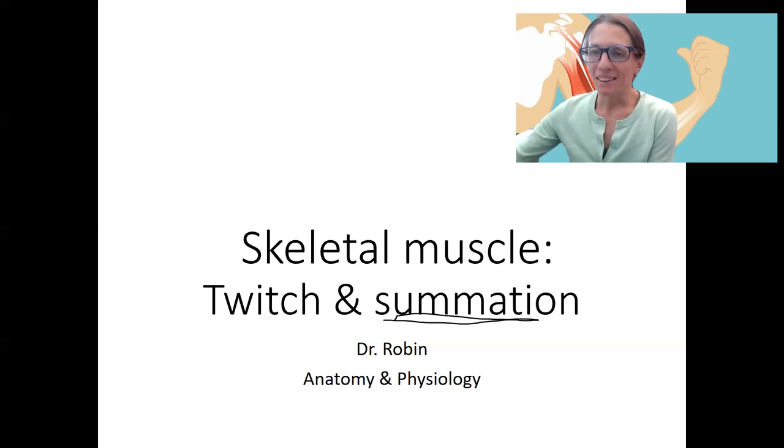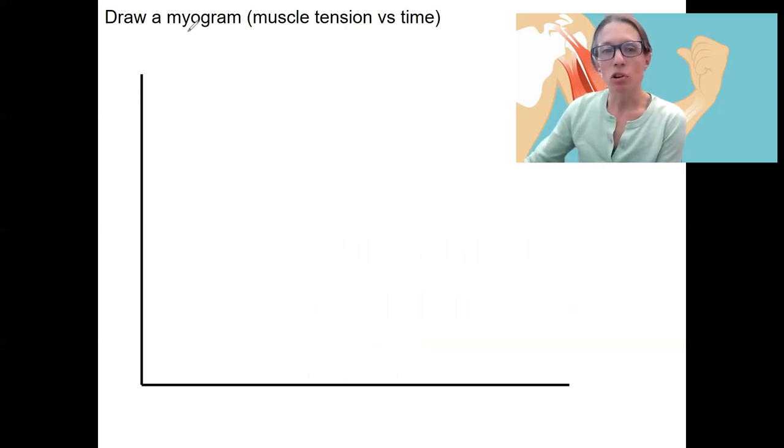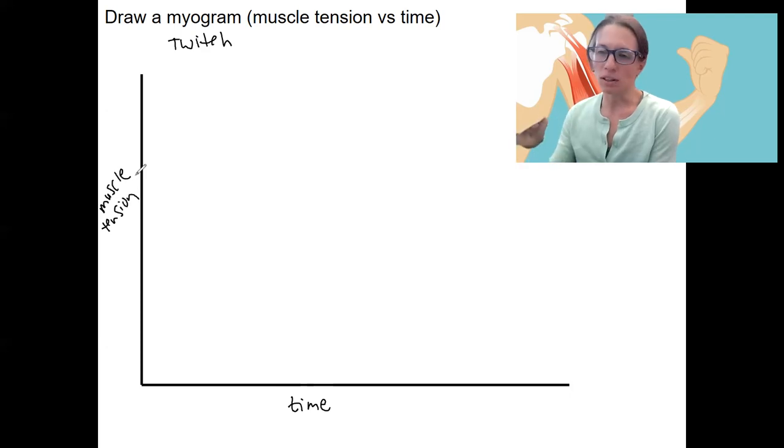So before we go into summation, we need to look at how we can graph muscle tension. So we're actually first going to draw a twitch and we're going to draw it on a myogram, which is over time, the changes in muscle tension, right? Muscle tension is what we produce from those contractions that we've talked about.